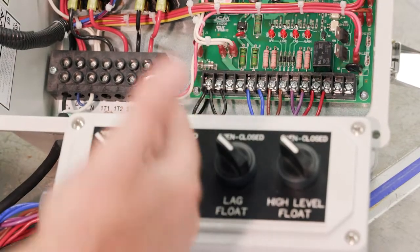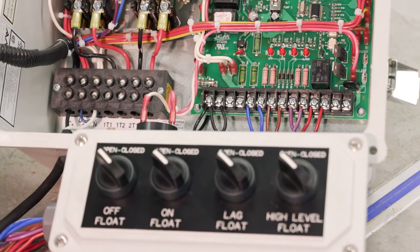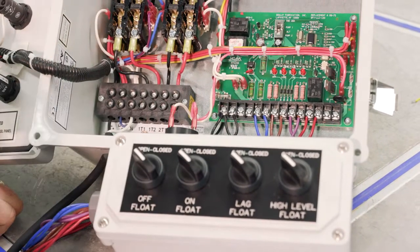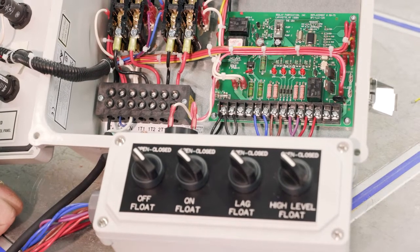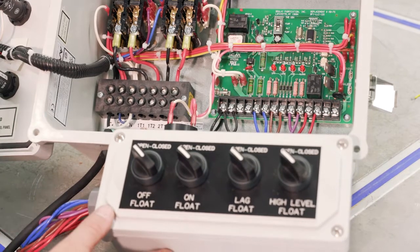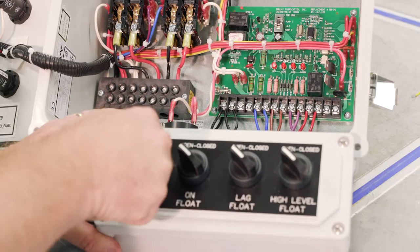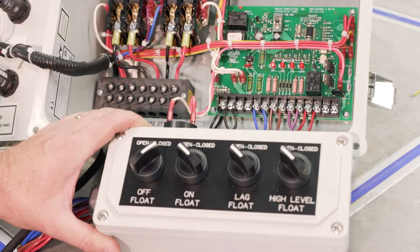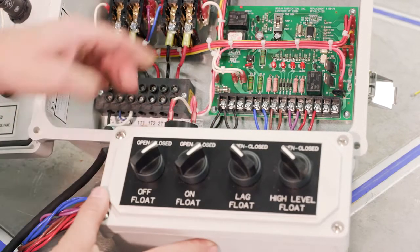Let's do that sequence again, because we have an alternating system, and we should see the other pump automatically turn on, because it alternates. So let's go through that system again. Then off float first, light is on, nothing is happening, on float, light is on, should be this pump here, contactor pulls in.